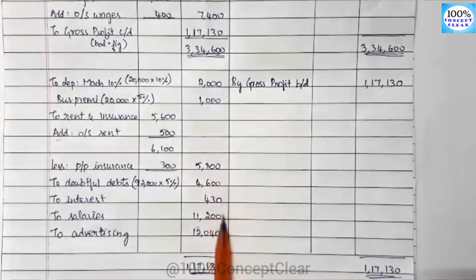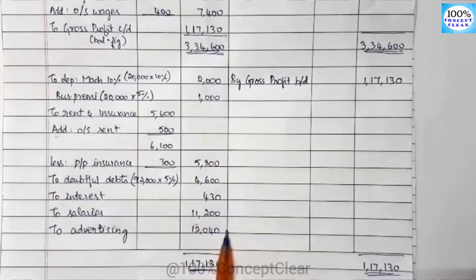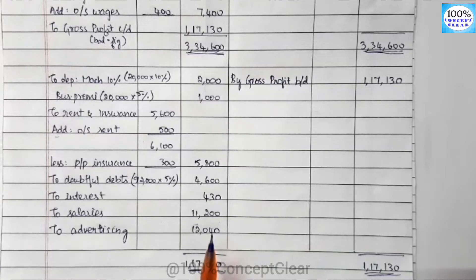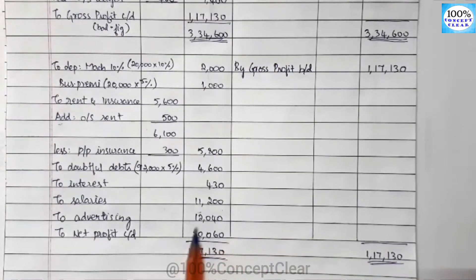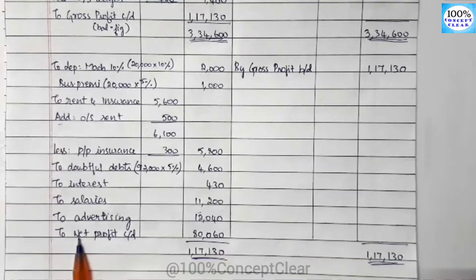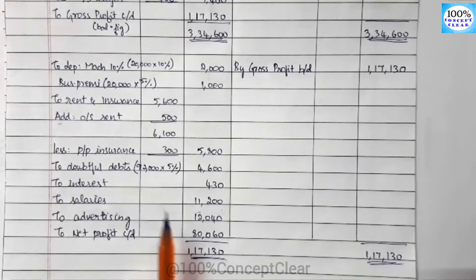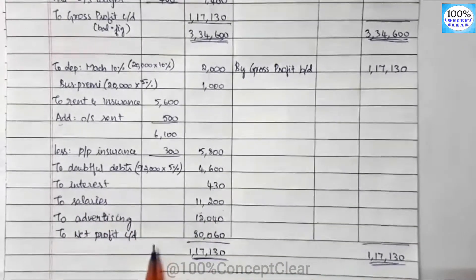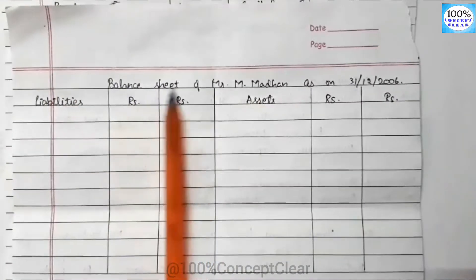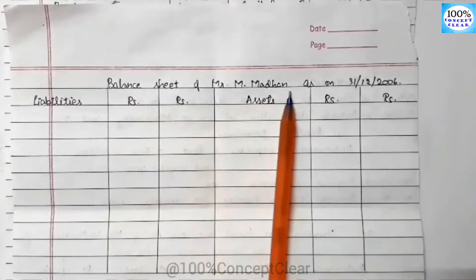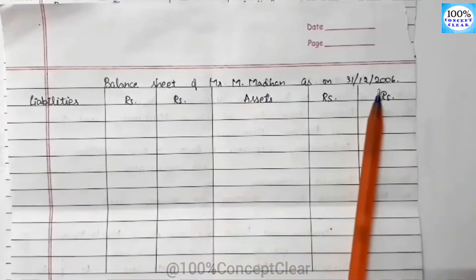Now we have the Balance Sheet. Balance Sheet of Mr. M as on 31-12-2006. On this side there are liabilities and on this side there are assets.